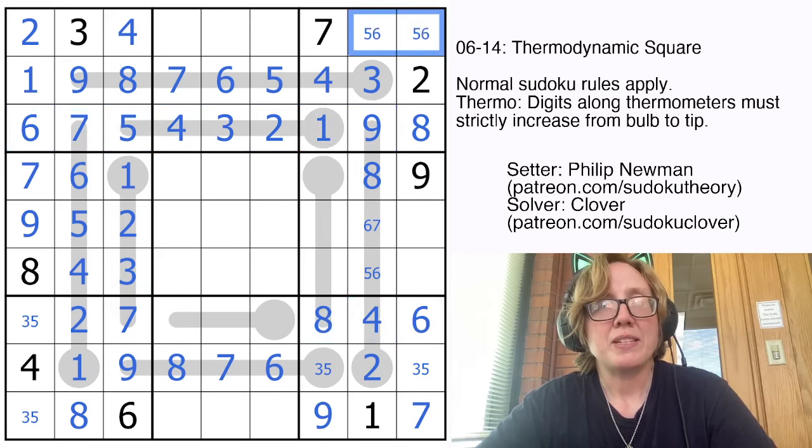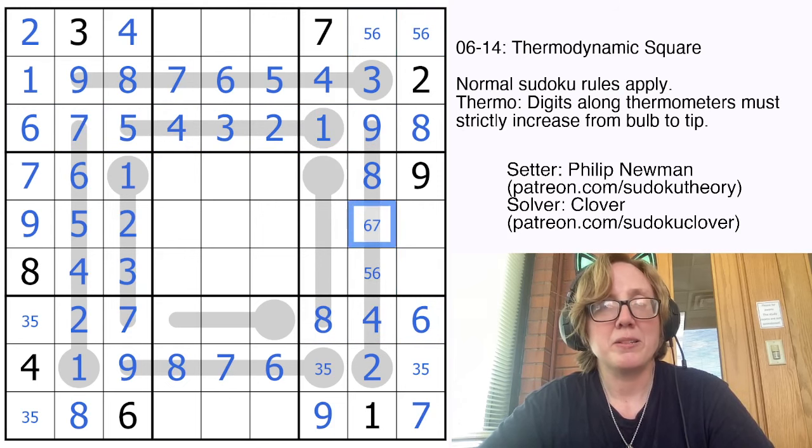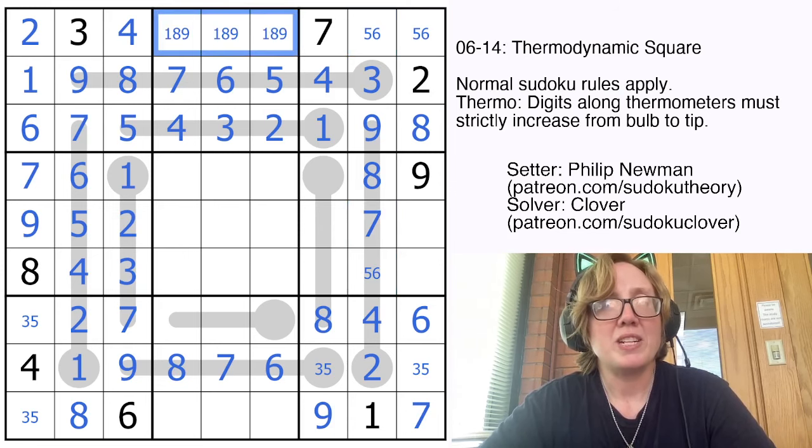That's now a 6 and an 8. These two cells have to contain a 5 and a 6. And that's fun because we now have a 5, 6 pair here, which tells us this must be a 7. It can't be a 5 or a 6. These cells will contain 1, 8, and 9, and I can't resolve those yet.